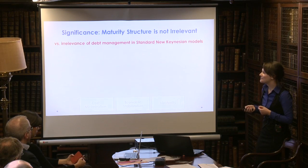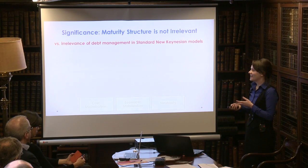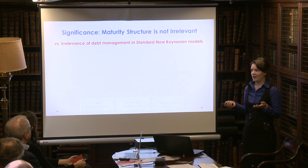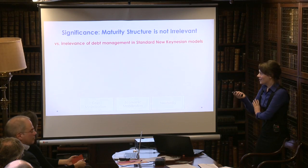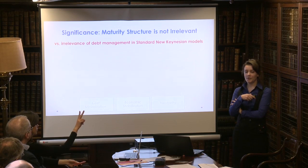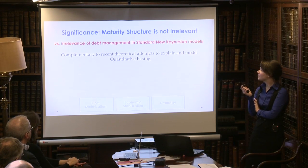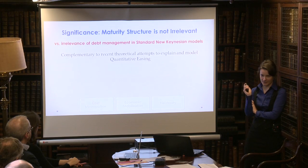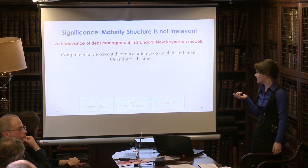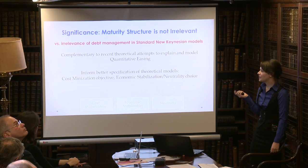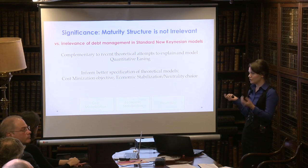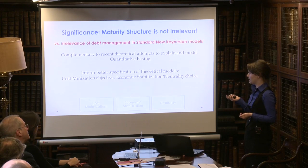Now, why is this significant? In the first place, I think this challenges the irrelevance of debt management in standard new Keynesian models. Given that policymakers have used maturity structure as a tool, some theoretical work has been done to explain and model quantitative easing. Quantitative easing was complex and had several different mechanisms, so I think this is at the forefront of the agenda. This research also informs the actual specification of models — we see that cost minimization is something countries do, so it should be included, as well as the economic stabilization and neutrality choice.